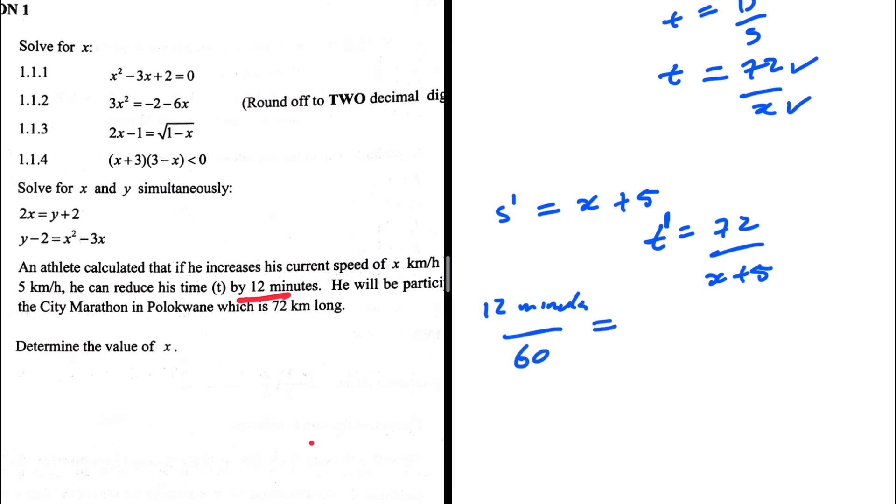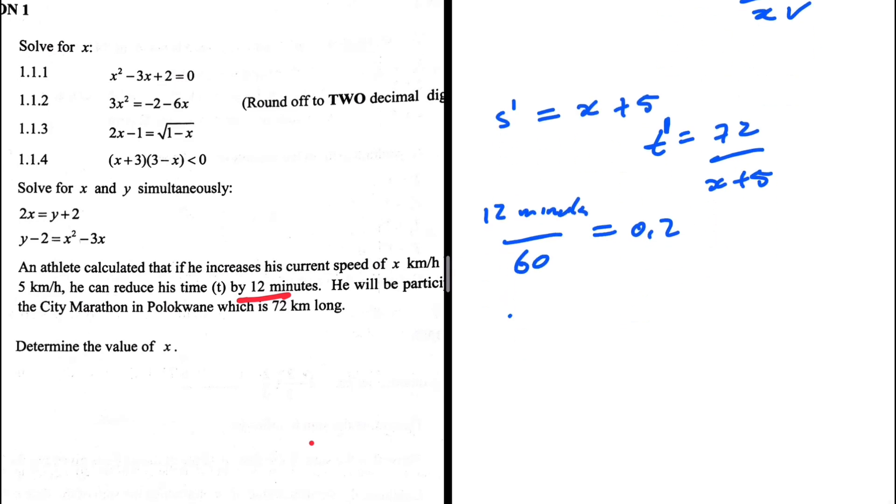12 over 60 is 0.2. So we decrease the time t by 0.2 hours when we increase the speed by five kilometers per hour. So t, the initial time when the speed is x, minus t prime when we increase the speed by five kilometers per hour should give us 0.2 hours because we reduce the time by that much.